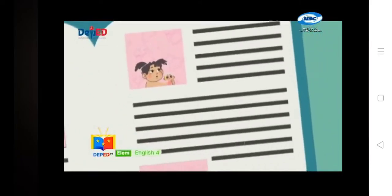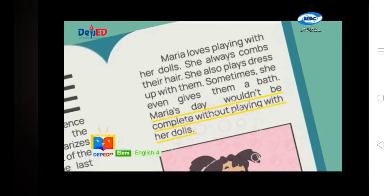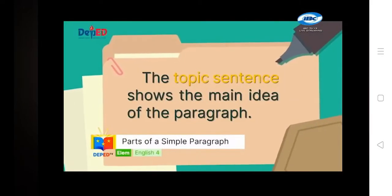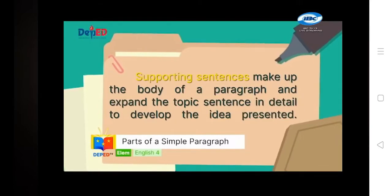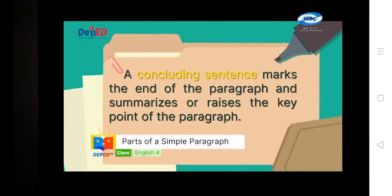The third and last part of a paragraph is called the concluding sentence. A concluding sentence marks the end of a paragraph and it summarizes or restates the key points. This is the last sentence in a paragraph. In this paragraph, it is concluded that Maria's day wouldn't be complete without playing with her dolls. To recap: the topic sentence shows the main idea; supporting sentences make up the body and expand the topic sentence; and the concluding sentence marks the end and summarizes the paragraph.